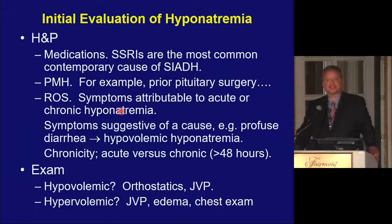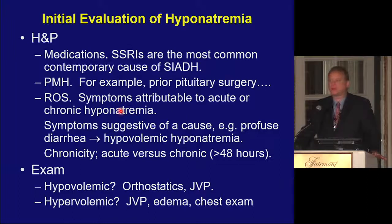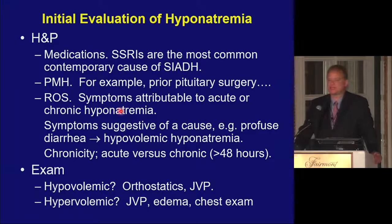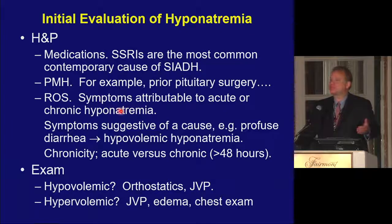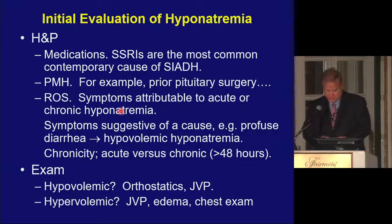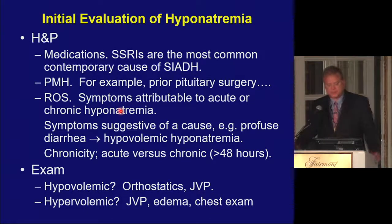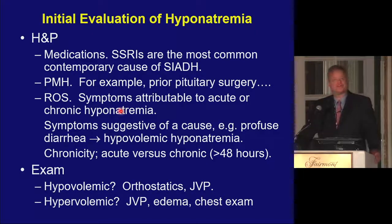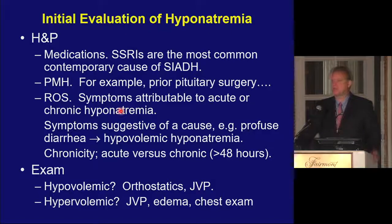When we think of the initial evaluation of hyponatremia, first we take a history and do a physical. Medications are key — by far the single most common cause of SIADH that we see is SSRIs or related antidepressants. Past medical history is important: has this patient had prior pituitary surgery, making vasopressin problems likely? Review of symptoms: symptoms attributable to acute or chronic hyponatremia, or symptoms suggestive of a cause — for example, profuse diarrhea causing hypovolemic hyponatremia. You also really want to get some idea of how long the process has been going on.